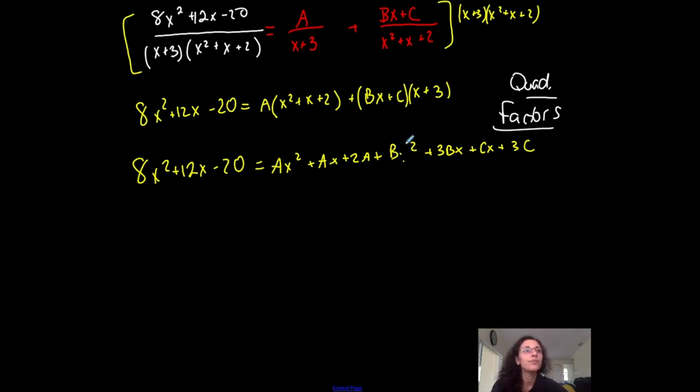You know, everything is legible. Readable. Copy down. AX squared plus AX plus 2A. Foil first, BX squared. Outer, plus 3BX. Inner, plus CX. And last, plus 3C. So I'm looking good.